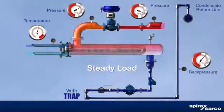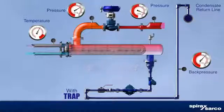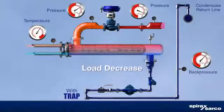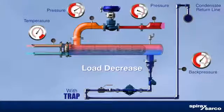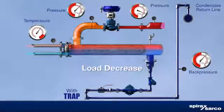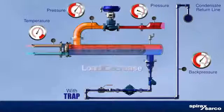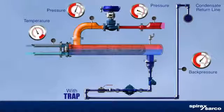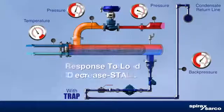Under a steady high load, differential pressure removes the condensate from the heat exchanger. Under reduced heating load, the control valve throttles down, reducing the steam pressure inside the heat exchanger. This also reduces the differential pressure across the steam trap, making the trap unable to remove the condensate. This happens in all heat exchangers, whether properly sized or oversized, and causes condensate to flood the steam space — known as heat exchanger stall.